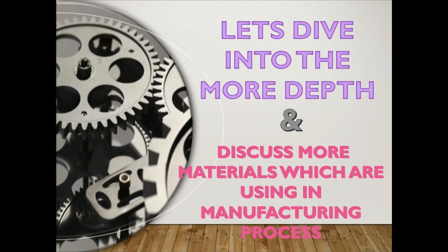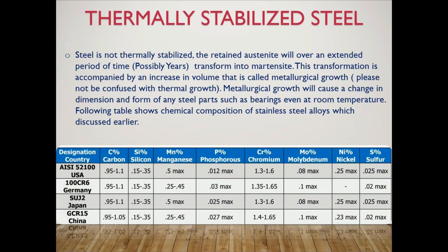Let's dive into more depth and discuss more materials used in bearing production. Thermally stabilized steel: if steel is not thermally stabilized, the retained austenite will, over an extended period of time — possibly years — transform into martensite. This transformation is accompanied by an increase in volume called metallurgical growth. Please note this is not to be confused with thermal growth. Metallurgical growth will cause a change in dimension and form of a steel part such as a bearing, even at room temperature.